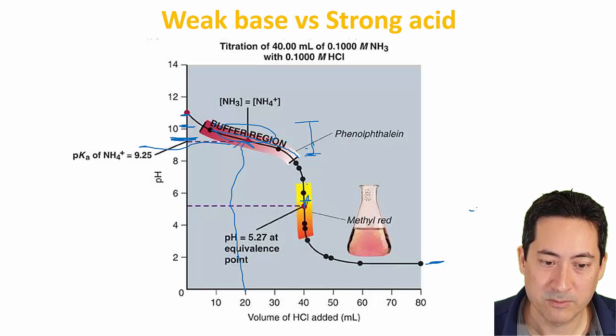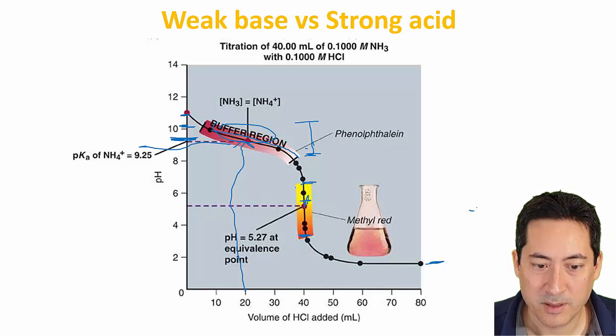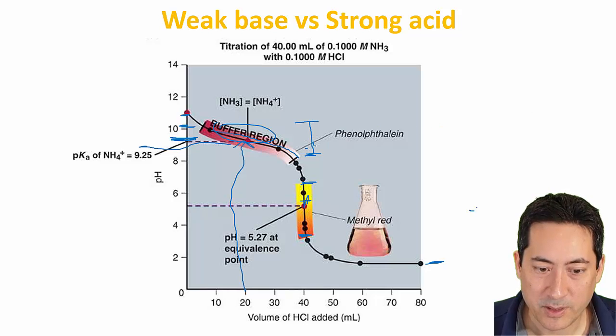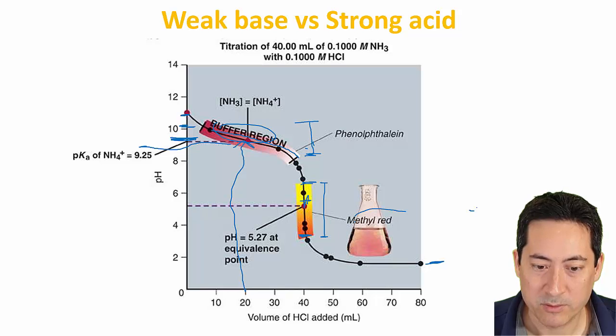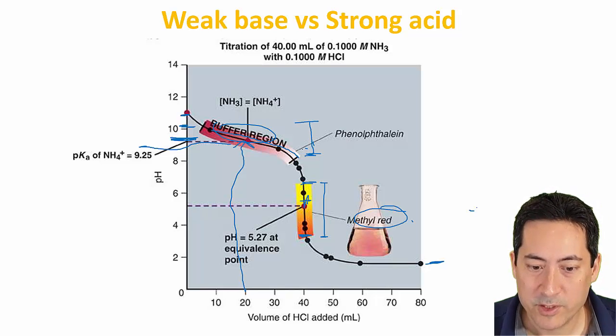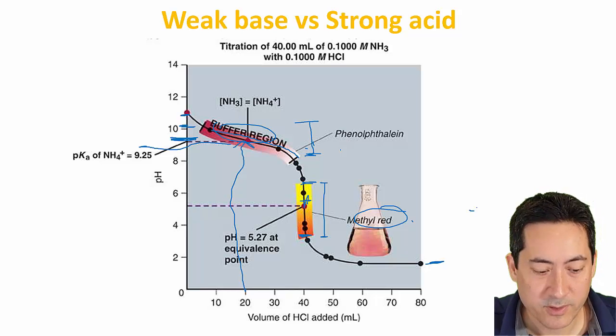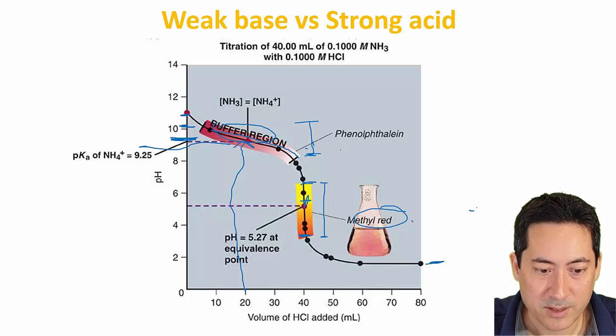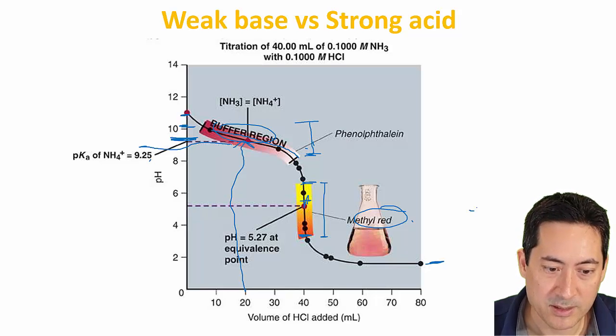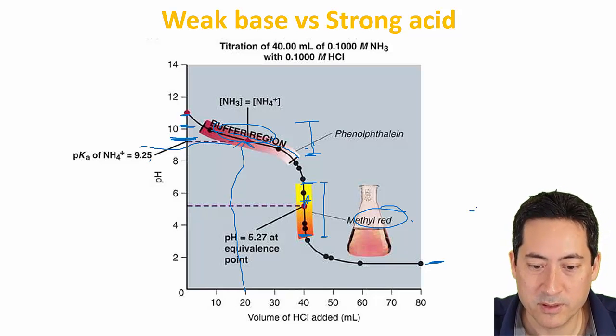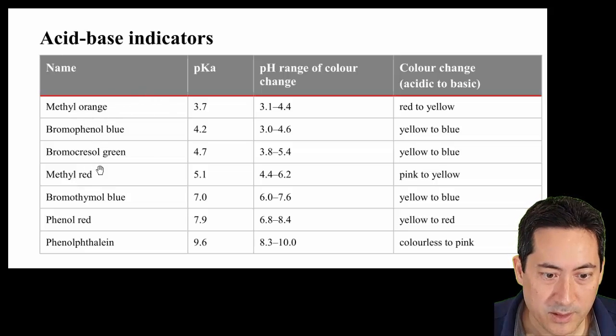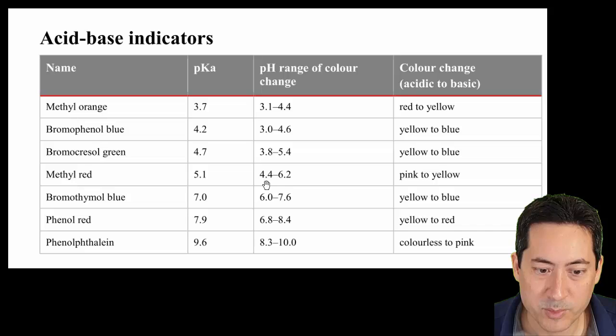We need methyl red in that case, because the pH jump is going to be much more detectable. The pH jump at the equivalence point is only going to be detected at the pH range where methyl red changes its color. If we just have a jump to the data book, let's see if methyl red does have a pKa that's similar to 5.27. Here we go, methyl red, 5.7, the range is 4.4 to 6.2. 5.7 is within that range, so methyl red will work.